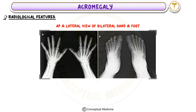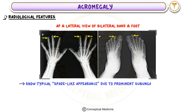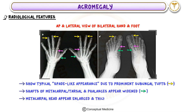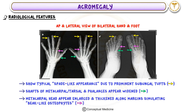AP and lateral views of bilateral hands and feet show a typical spade-like appearance due to prominent subungual tufts. Shafts of metacarpal, tarsal, and phalangeal bones appear widened. Metacarpal heads appear enlarged and thickened along the margins, simulating beak-like osteophytes.